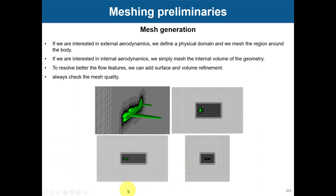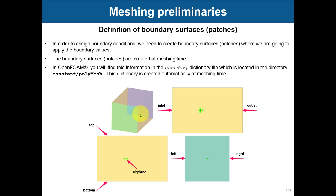Then you create the mesh, generating a refinement region around the body and around the surface. After that you need to assign boundary conditions. In OpenFOAM that is done in the file constant/polyMesh/boundary, which we have already manipulated in Module 1. You need to give names — in this case inlet, outlet, top, bottom, airplane, left, and right — and assign a type. All patches except the airplane are of type patch, and the airplane is a wall. Then you go into the folder 0 and assign all the correct values.